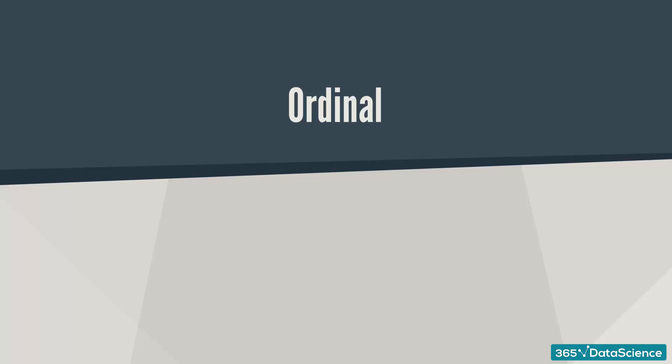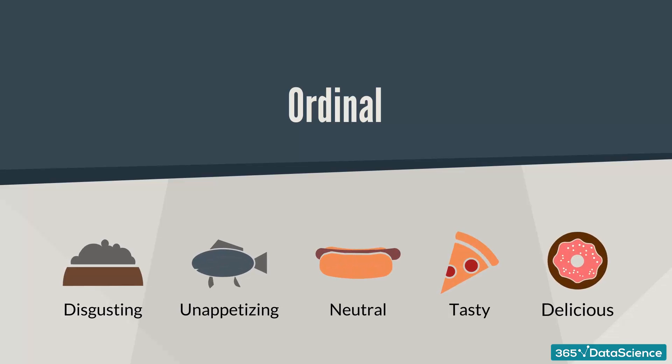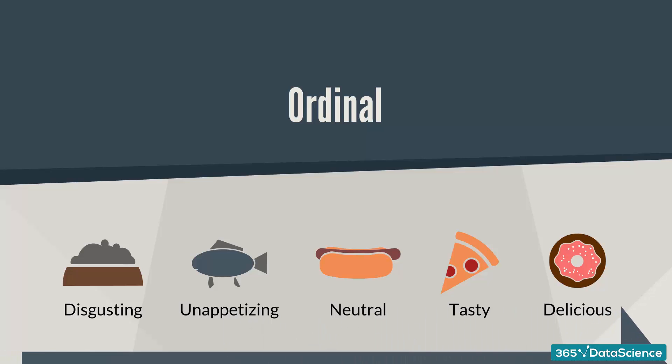Ordinal data, on the other hand, consists of groups and categories but follows a strict order. Imagine you have been asked to rate your lunch and the options are disgusting, unappetizing, neutral, tasty, and delicious. Although we have words and not numbers, it is obvious that these preferences are ordered from negative to positive. Thus, the data is qualitative ordinal.